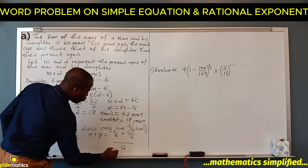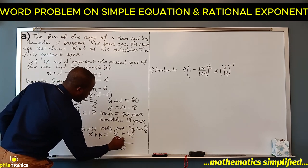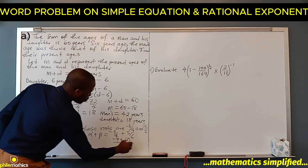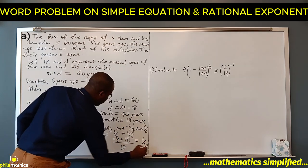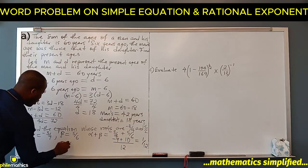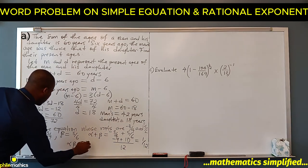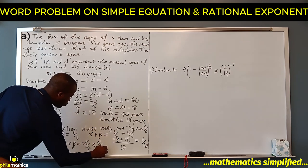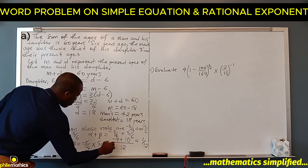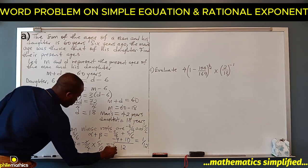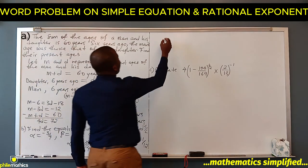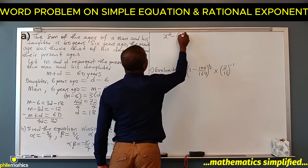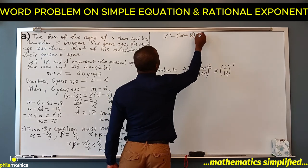Alpha plus beta equals minus 3 over 4 plus 5 over 6. The LCM is 12: 4 into 12 is 3, so 3 times minus 3 is minus 9; 6 into 12 is 2, so 2 times 5 is 10. Therefore alpha plus beta equals 1 over 12. Their product alpha times beta equals minus 3 over 4 times 5 over 6. Cancelling gives minus 5 over 8. The formula for the equation is x squared minus the sum of the roots times x plus the product.